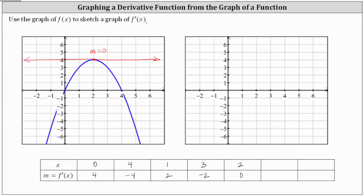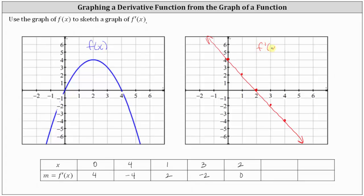So first we have the point zero comma four, then we have four comma negative four, one comma two, three comma negative two, and two comma zero. The graph of the derivative function is a line passing through these five points. So we have f of x on the left, and we have f prime of x, or the derivative function, on the right.